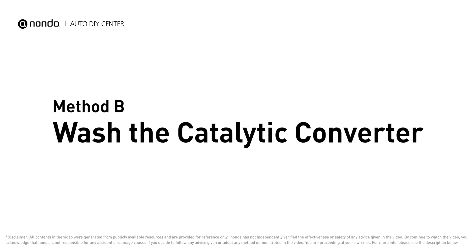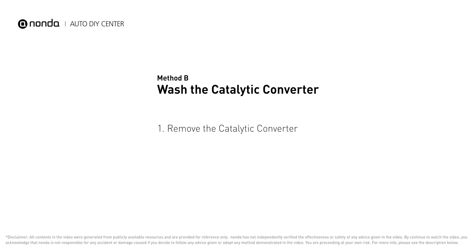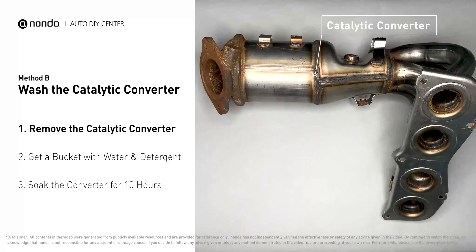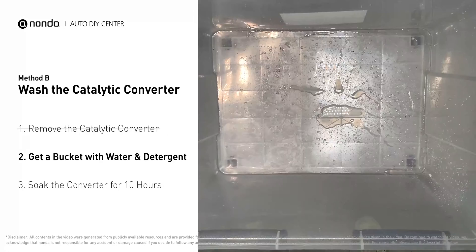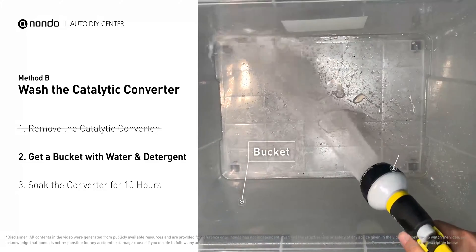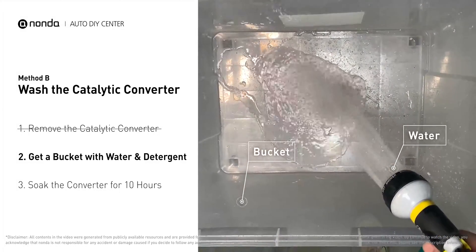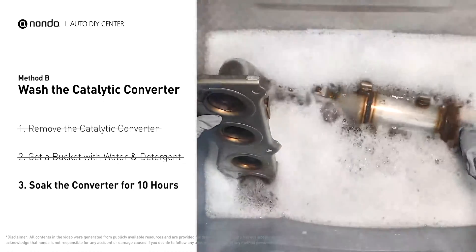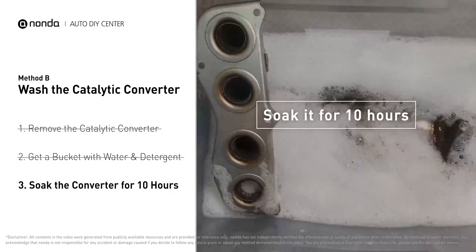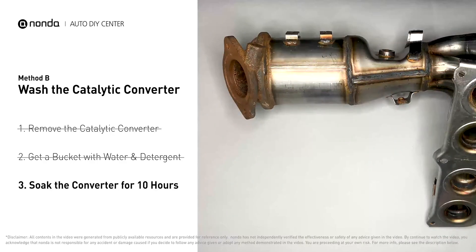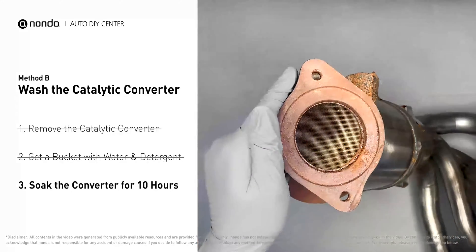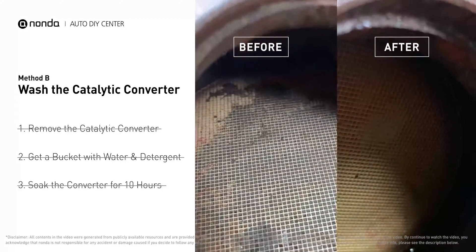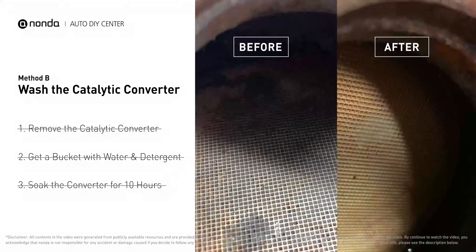Method B: wash the catalytic converter. First, remove the catalytic converter from your vehicle. Then get a bucket, put some detergent soap in it, and foam it up. Put the catalytic converter into the solution and soak it for 10 hours to remove all the crud inside. Looking inside the converter, you can see all kinds of little honeycomb shapes. They clog up easily, and cleaning will often make them open and work again.